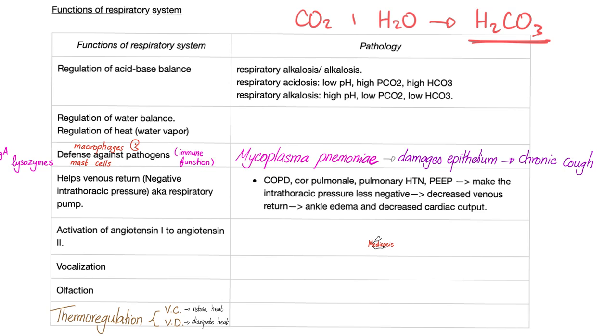Conversely, if you're breathing slowly like this, you're retaining carbon dioxide causing respiratory acidosis. Therefore, hypoventilation causes respiratory acidosis. So when your respiratory rate is high, you get respiratory alkalosis. But when your respiratory rate is low, you get respiratory acidosis. Of course, respiratory rate is the number of breaths per minute.